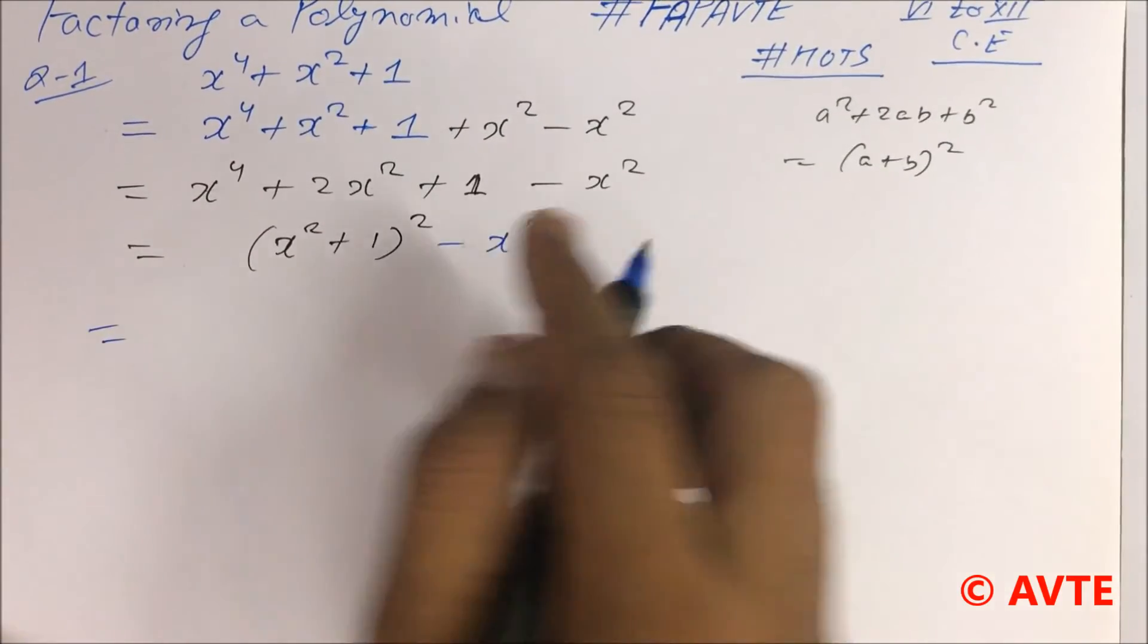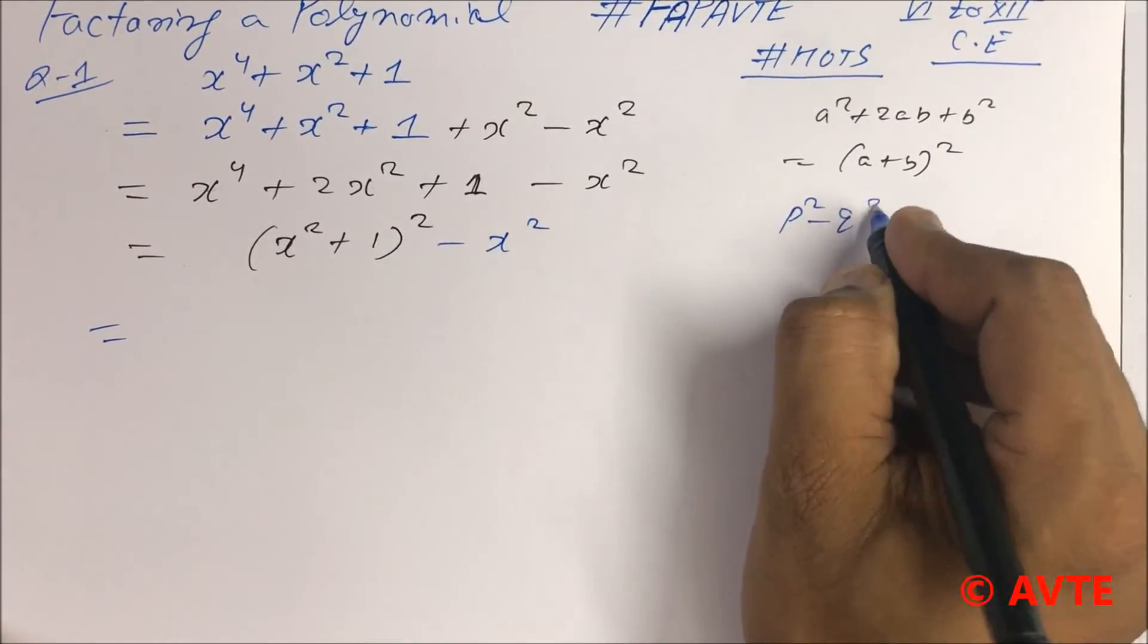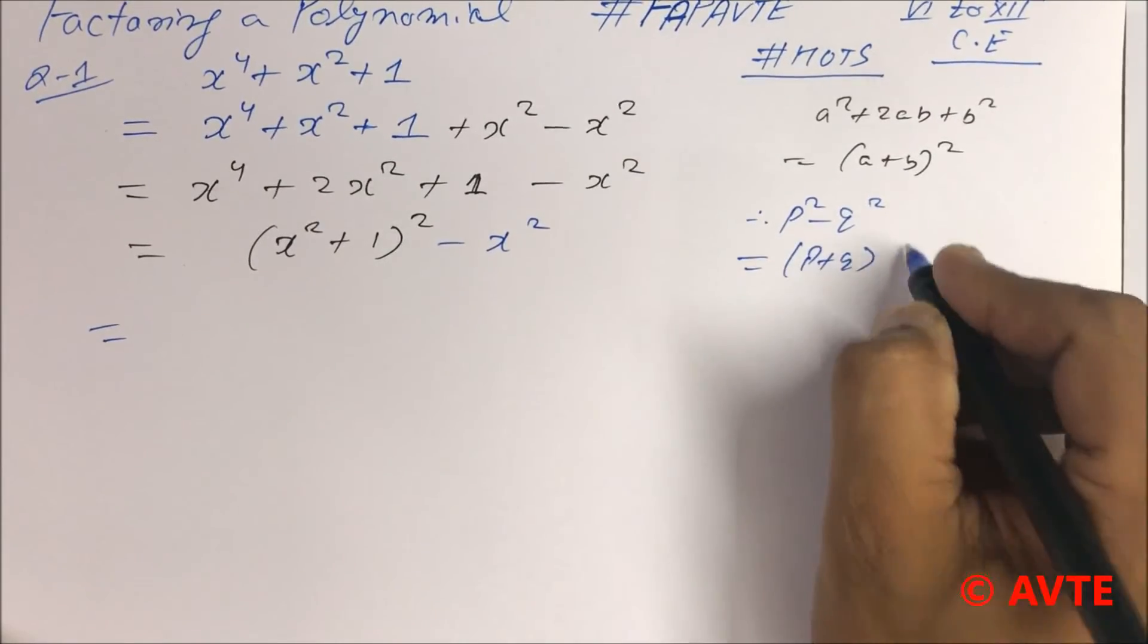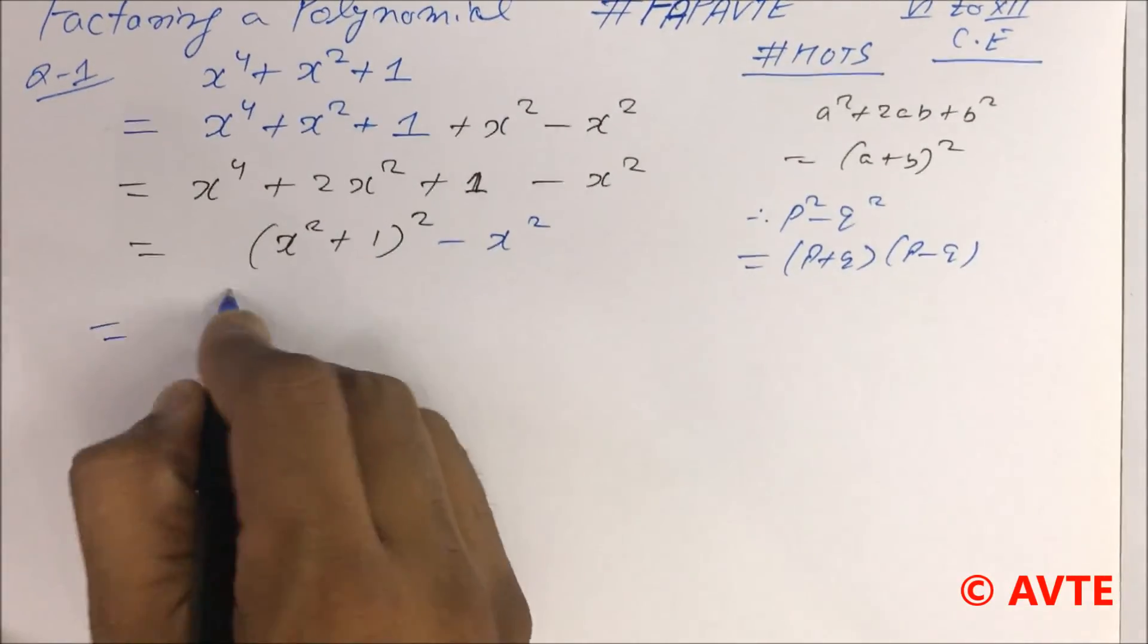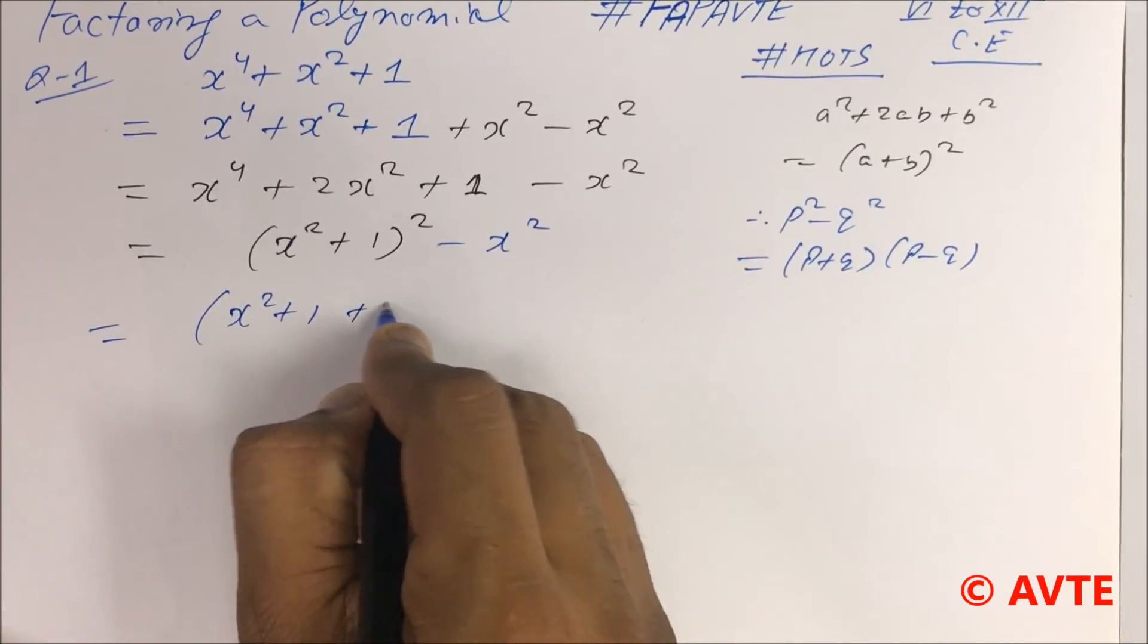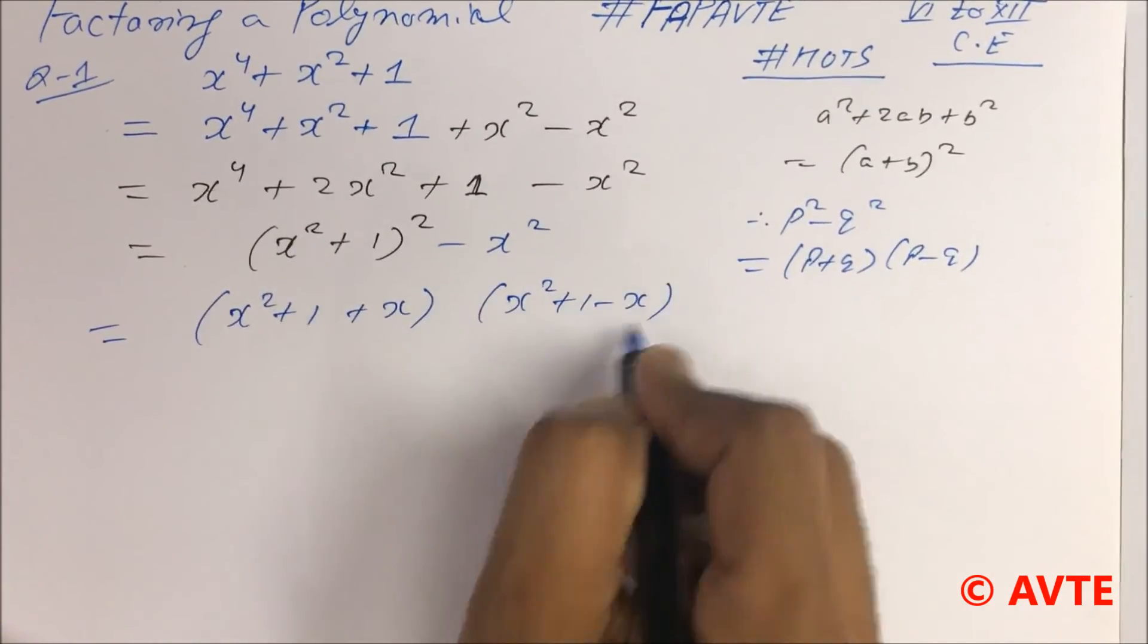So now this is p square minus q square. How to identify p square minus q square? That is p plus q into p minus q. So this is x square plus 1 plus x and this is x square plus 1 minus x.